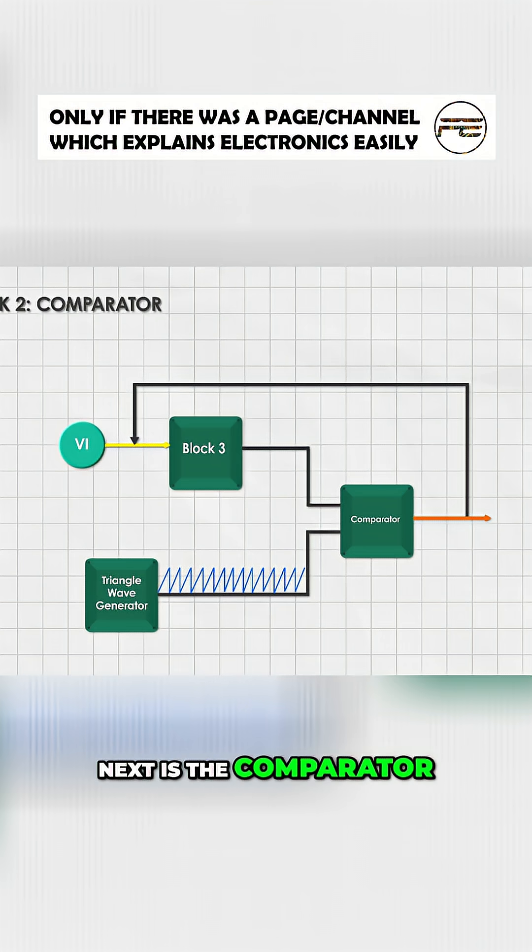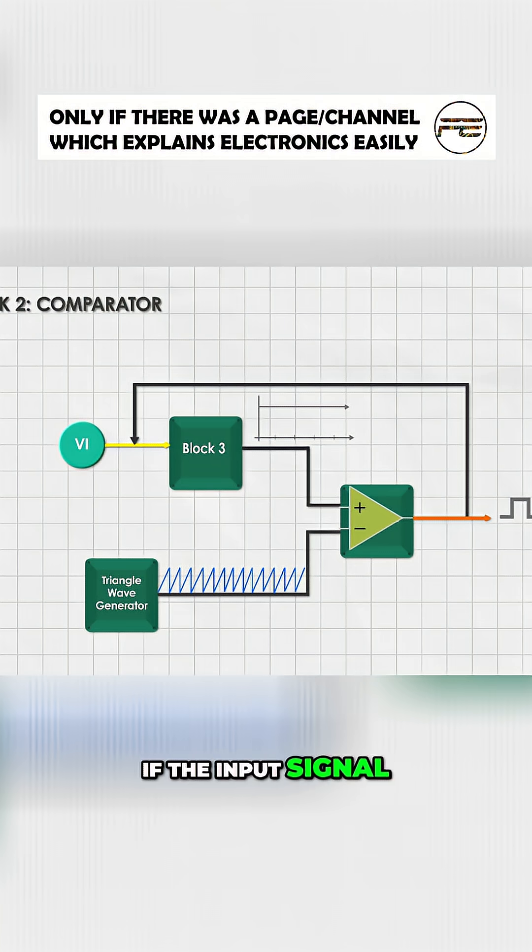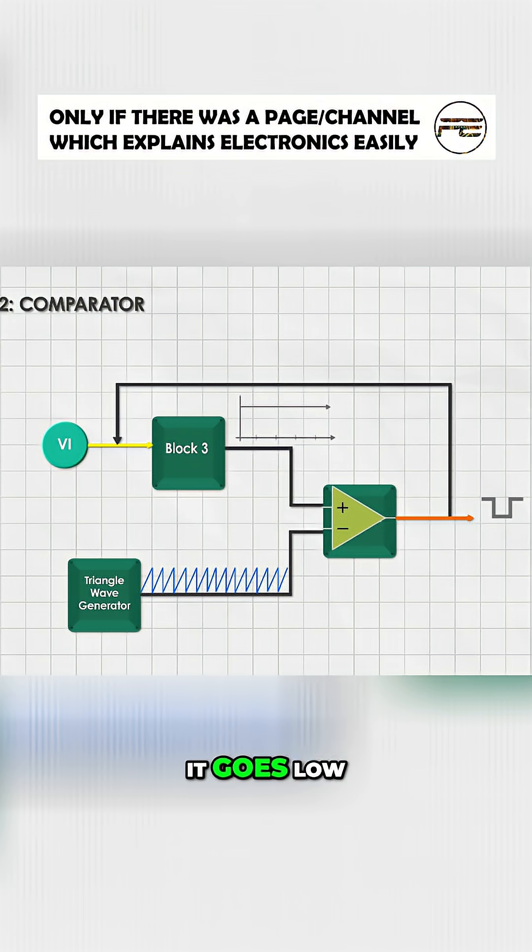Next is the comparator. It takes in the triangular wave from the first block and the modulating input signal from the third block. If the input signal is higher than the triangular wave at any point, the output of the comparator goes high. If not, it goes low.